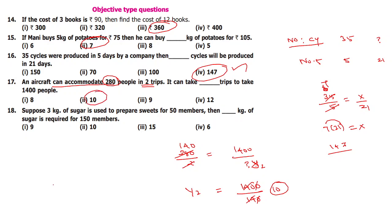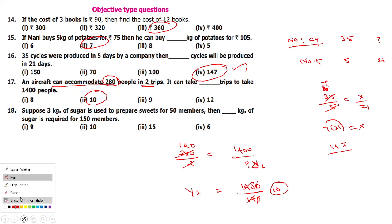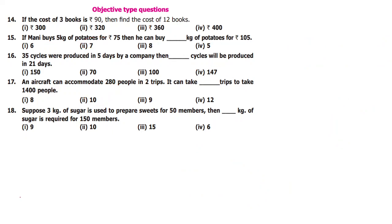The answers are: 10, 147, 7, and 360. I will tell you that 3 kg sugar is used for 50 members.